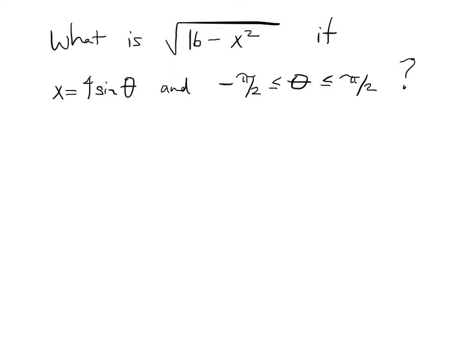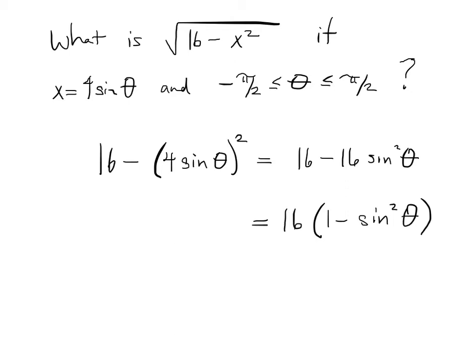So this question, as presented in the book, kind of gives you the answer because they tell you to substitute x equals 4 sine theta. And we can do that and say 16 minus 4 sine theta squared equals 16 minus 16 sine squared theta equals 16 times 1 minus sine squared theta, which equals 16 cosine squared theta.